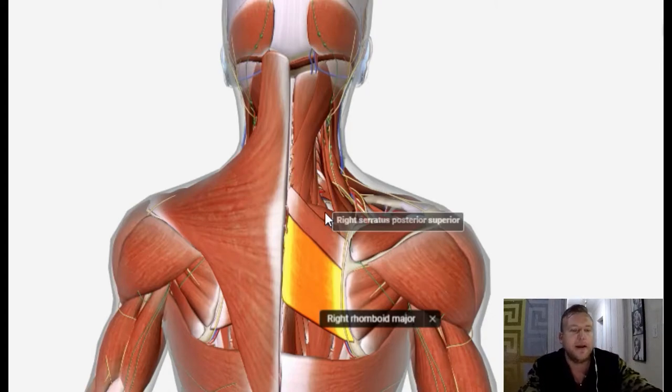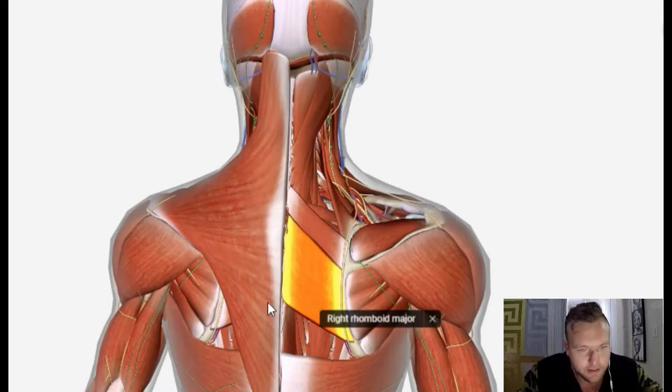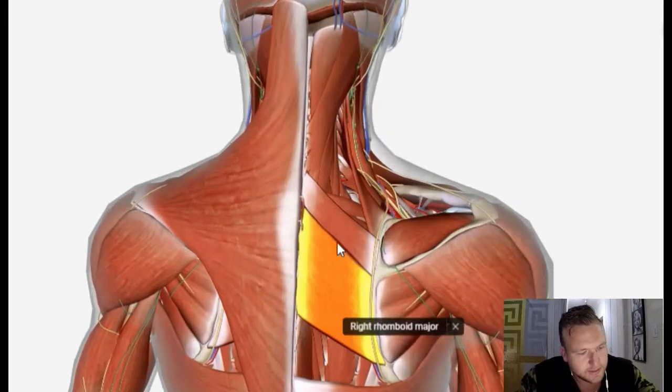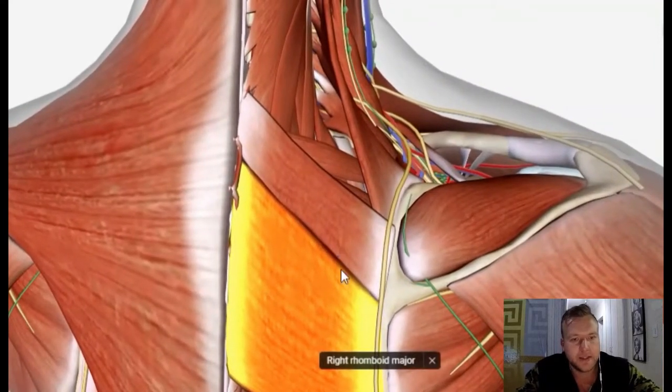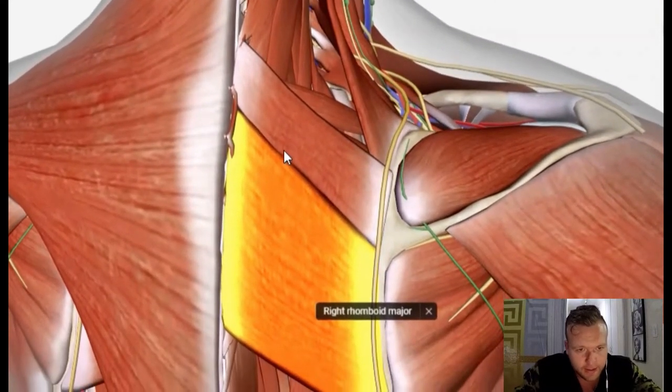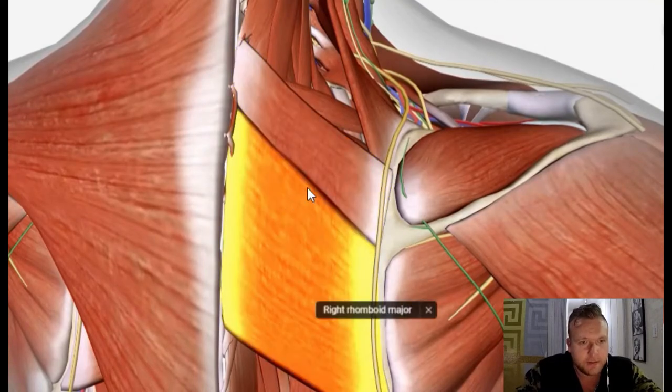So when you feel like you're getting tense and it feels like everything's pulling funny, it could be the trap that's pulling up and the rhomboid muscles that are pulling back and causing that tightness. When you're massaging, you want to focus on the rhomboids. You can see exactly where they are here: the minor and the major.